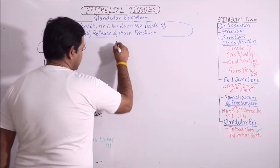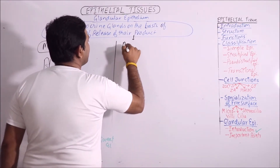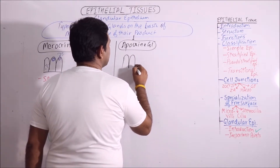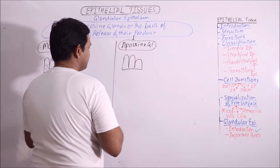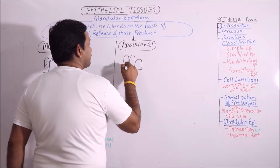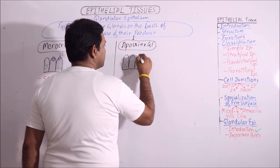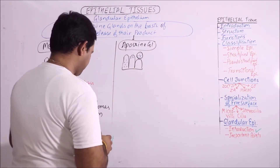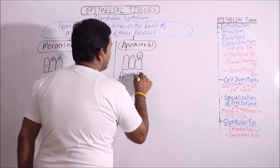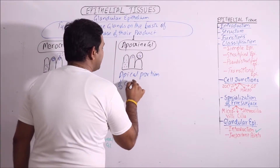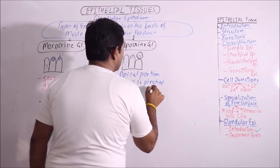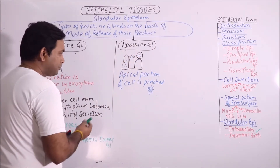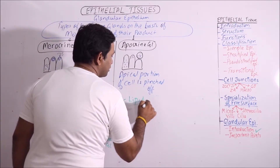Then comes another mode of secretion — that is apocrine glands. In apocrine glands, the secretion is accumulated in the apical portion, and the apical portion is pinched off from the cell. So the apical portion of the cell is pinched off, meaning the cell membrane and the cytoplasm both enter the secretion along with it.